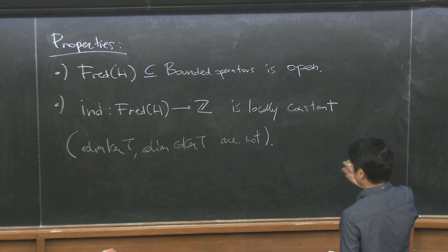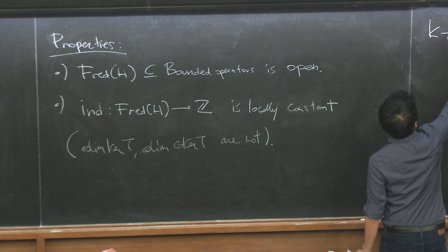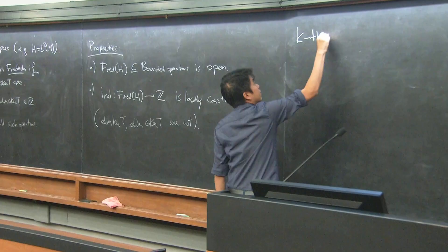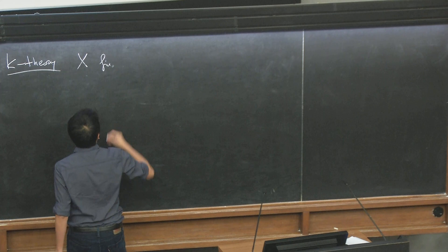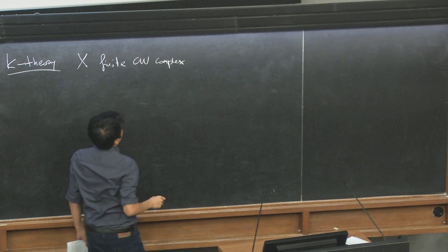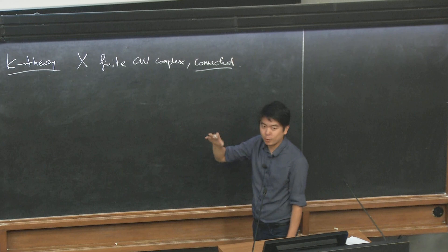K-theory is some kind of algebraic topology invariant of a space. Let's say we start with X, a finite CW complex, and for everything I'll say today I'll think of it as connected. You can define it also for non-connected spaces, but it's a little more annoying — you have to pick base points.